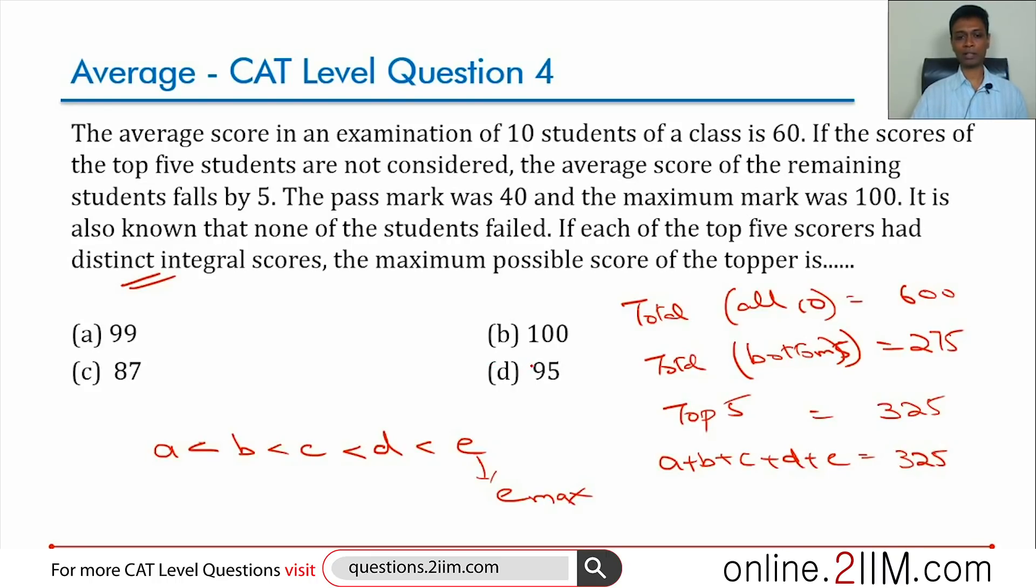E has to be maximum, a, b, c, d have to be minimum, as low as possible. Now think about it - they are the top five marks. The second, third, fourth have to be as low as possible, but I cannot put all of them at 40, the minimum mark, because the bottom five have averaged 55. The bottom five would have some marks which add up to an average of 55. So my a, b, c, d should all be above the highest of the bottom five. That I need to keep in mind.